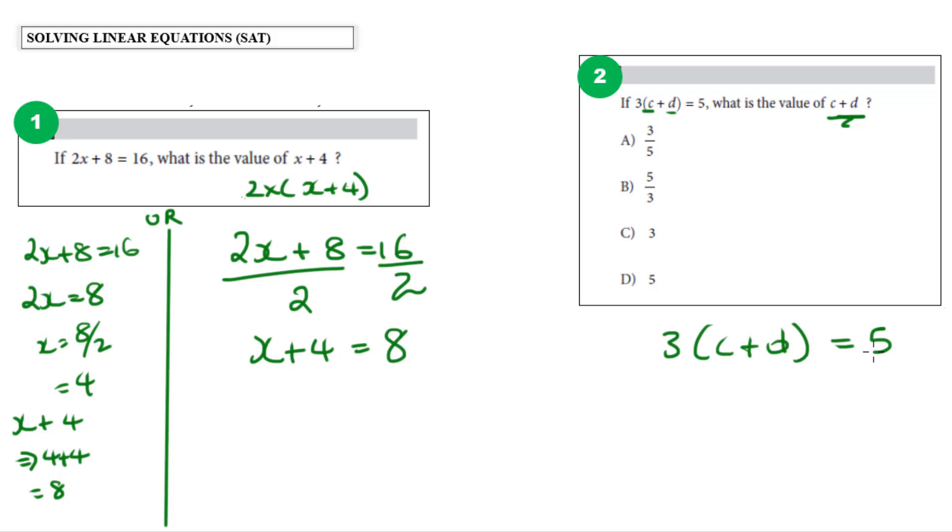So if 3 times c plus d is equal to 5, to get c plus d by itself I could divide this side by 3, and that would cancel the 3s. But that means I'd also have to divide the other side by 3. So that means c plus d would be equal to 5 over 3, and our answer here would be B.